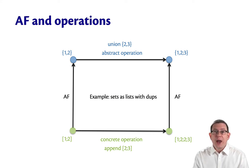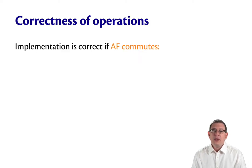This leads to a notion of correctness for operations of a data abstraction. The implementation is correct if the abstraction function commutes.